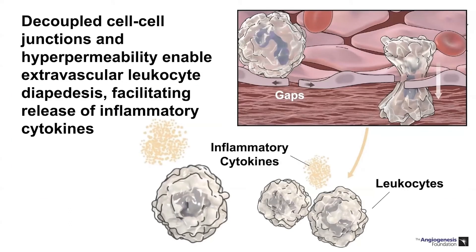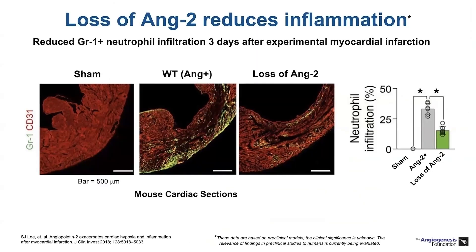Decoupling of these cell-to-cell tight junctions not only allows fluid egress but also allows extravasation of leukocytes—white blood cells migrating through broken down endothelial cell junctions—causing a local inflammatory response and local upregulation of cytokines. In a myocardial infarction preclinical model, there is significant extravasation of neutrophils in an ANG2 native state, whereas in an ANG2 deficient model there is a dramatic reduction in neutrophil extravasation into adjacent tissue.